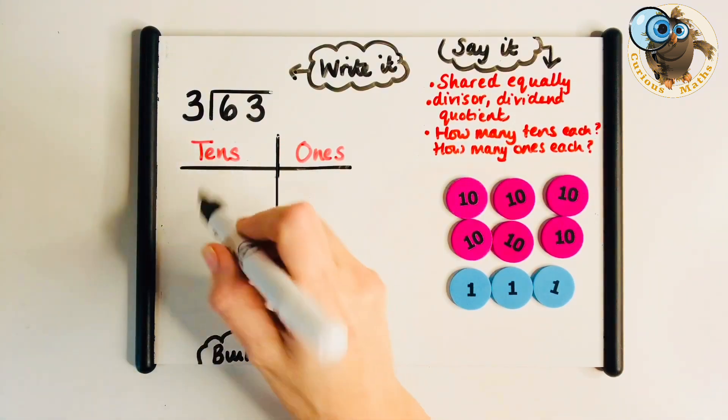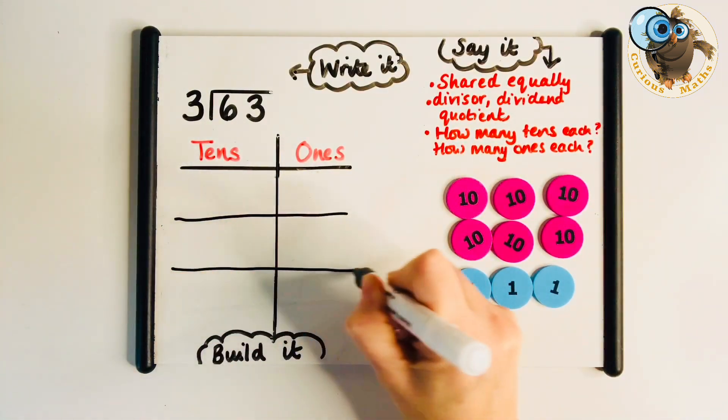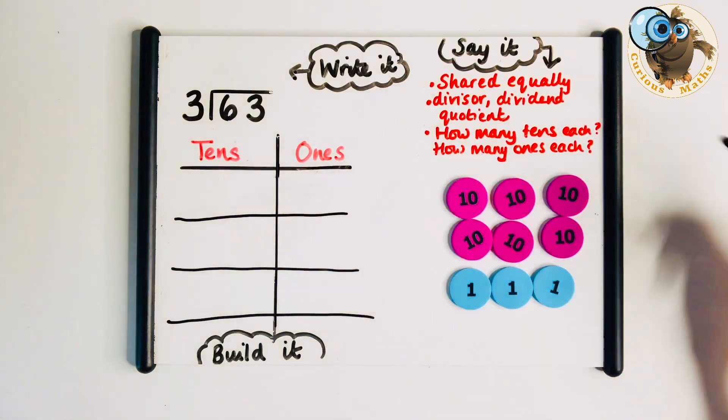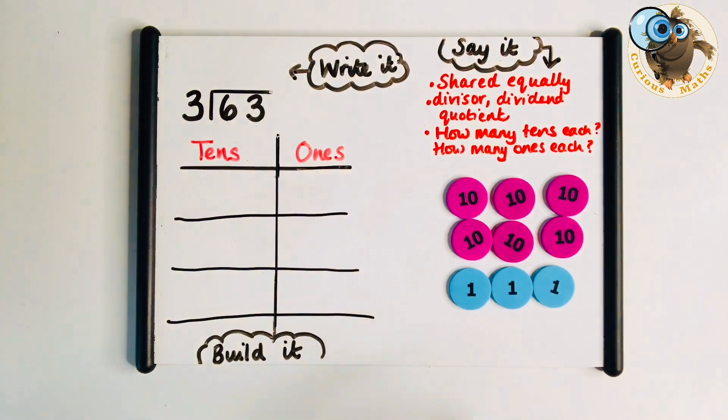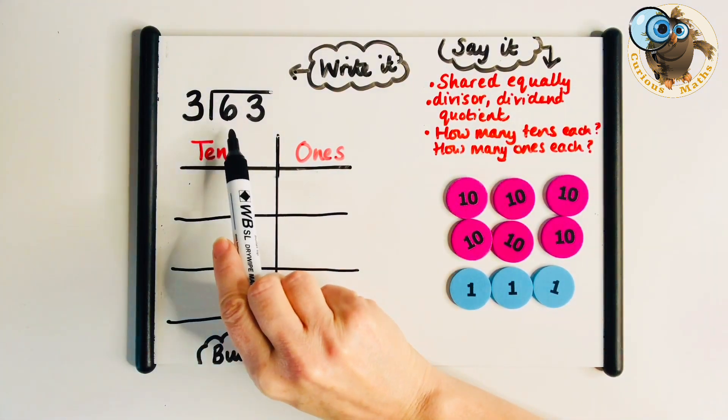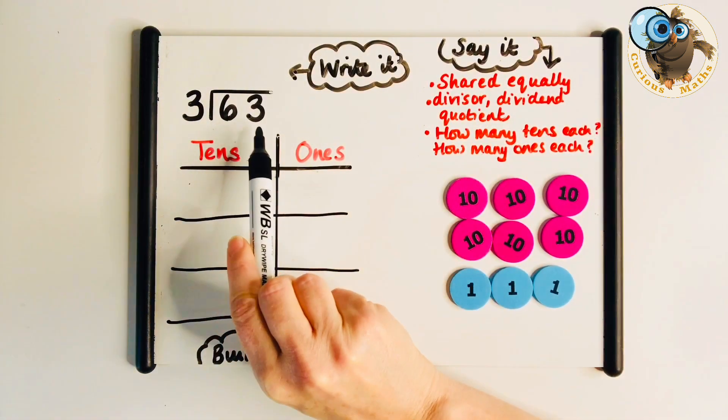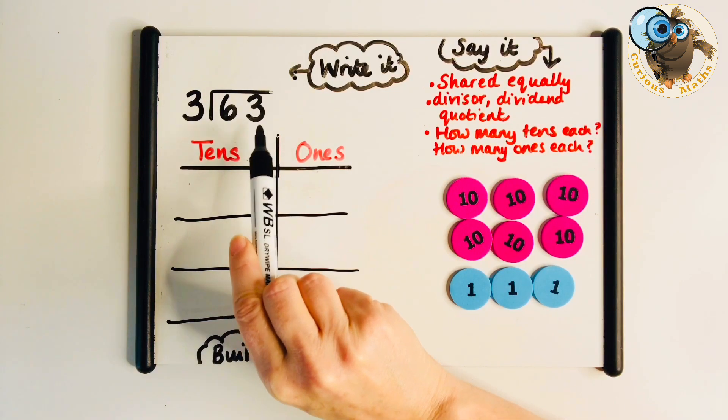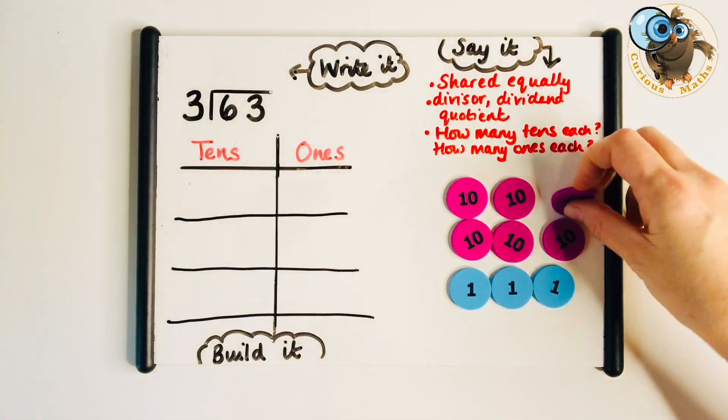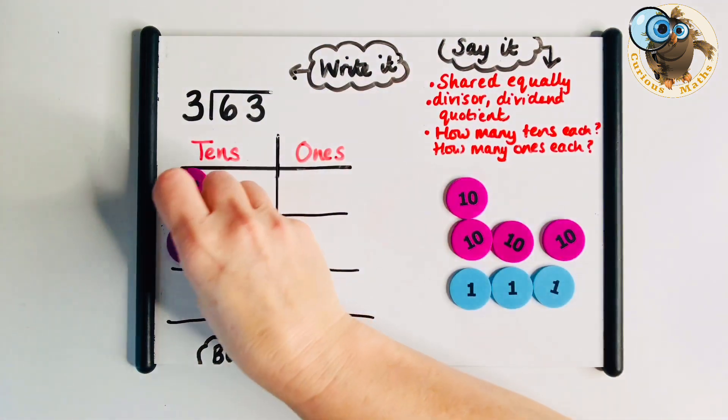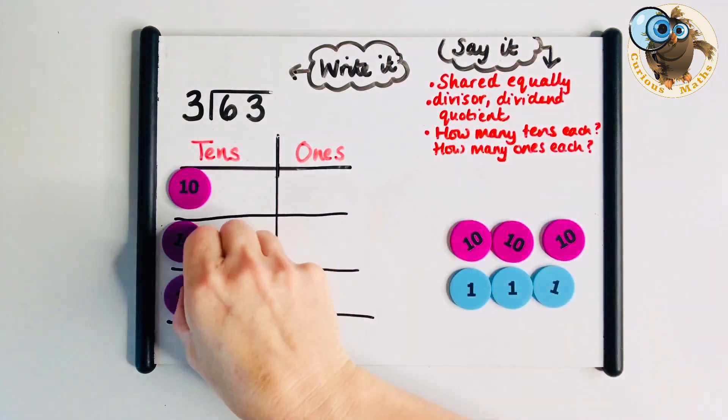I've made my 63 with place value counters and now I'm going to share them equally between the 3. This is a big step for children because this is the first time they've started on the left of a calculation and moved to the right. They're more used to starting in the 1s column than the 10s column so you may have to do quite a lot of modelling around this.